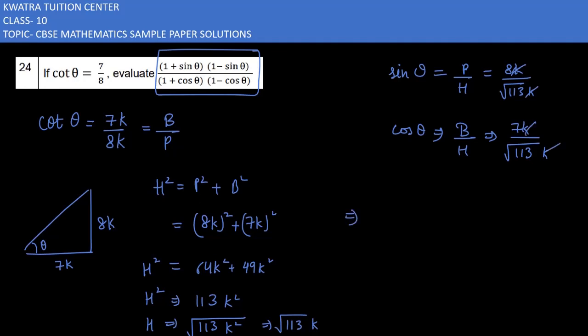Now substitute the values in the expression. (1 + sin θ)(1 - sin θ) is in a² - b² form, so it becomes 1² - sin²θ. The denominator becomes 1² - cos²θ.